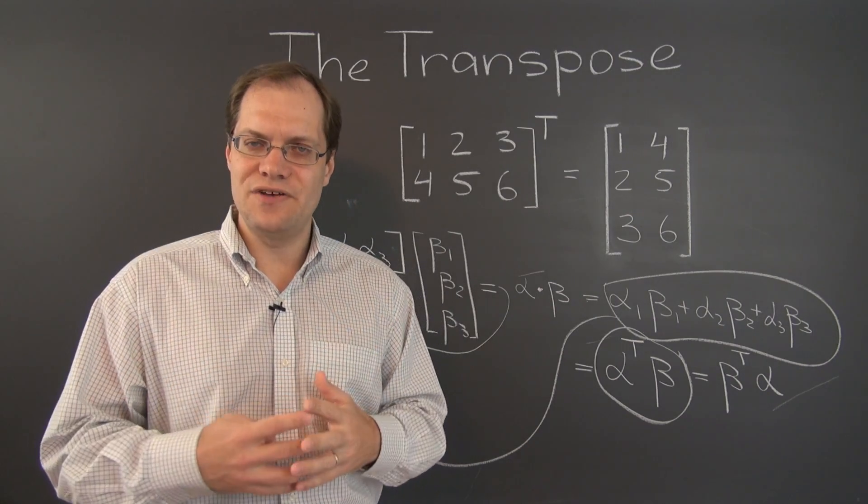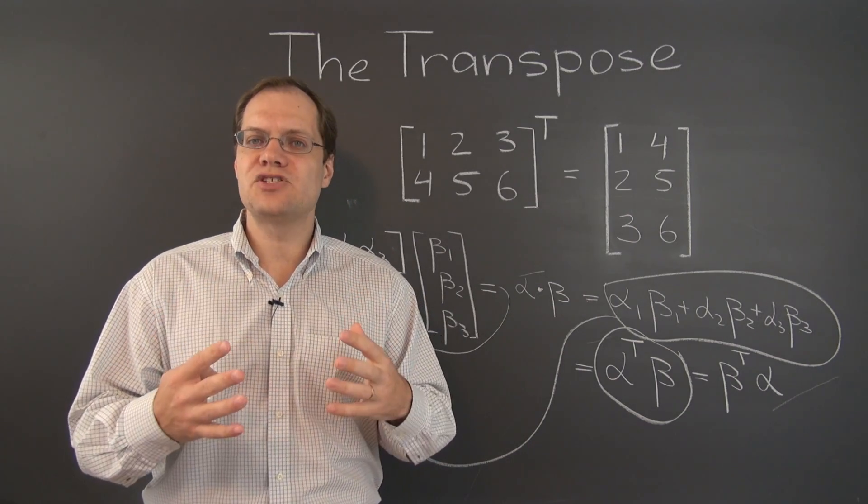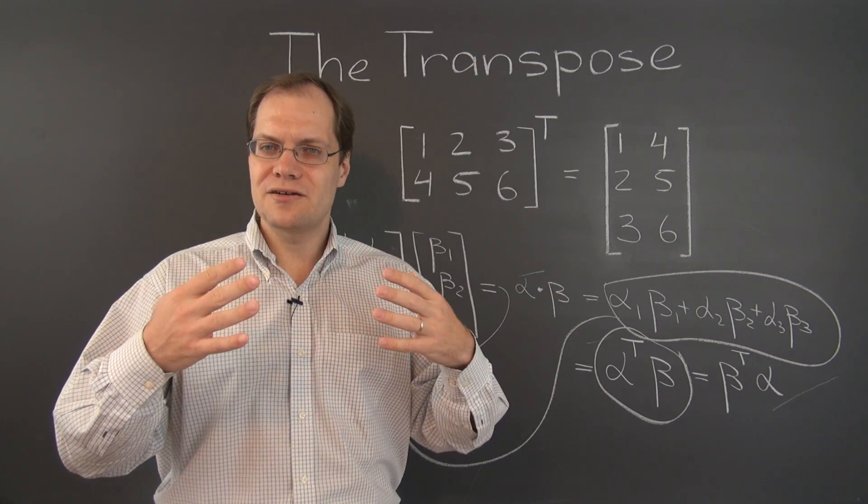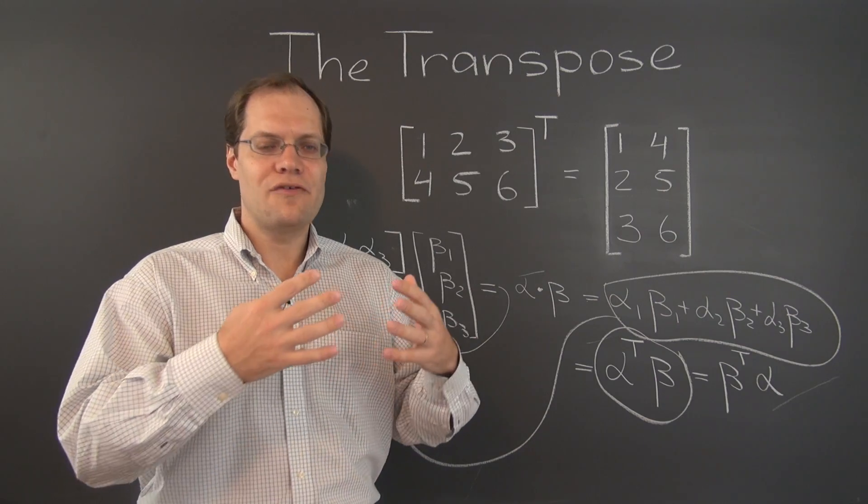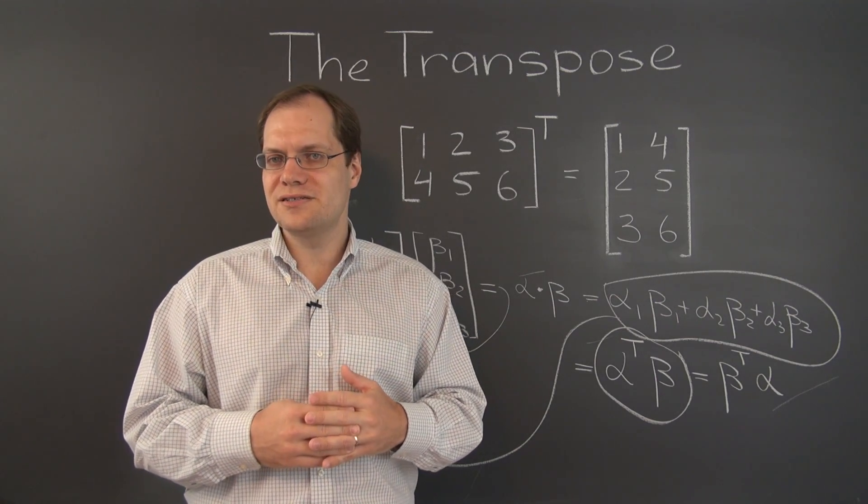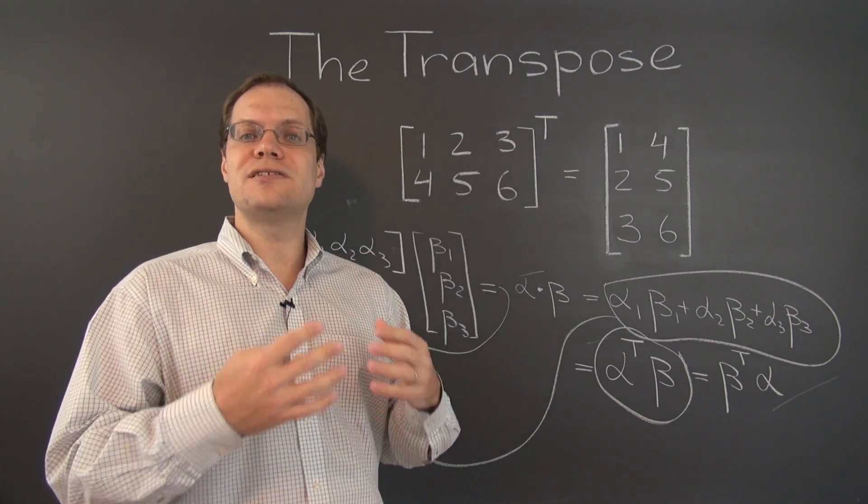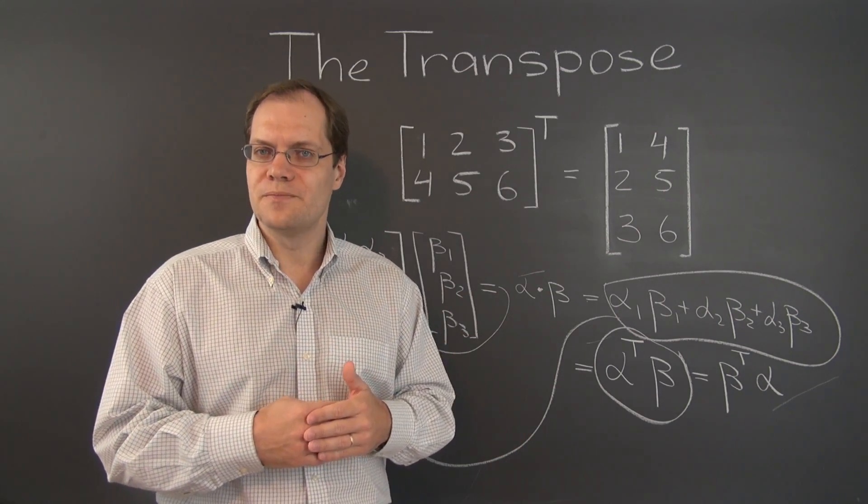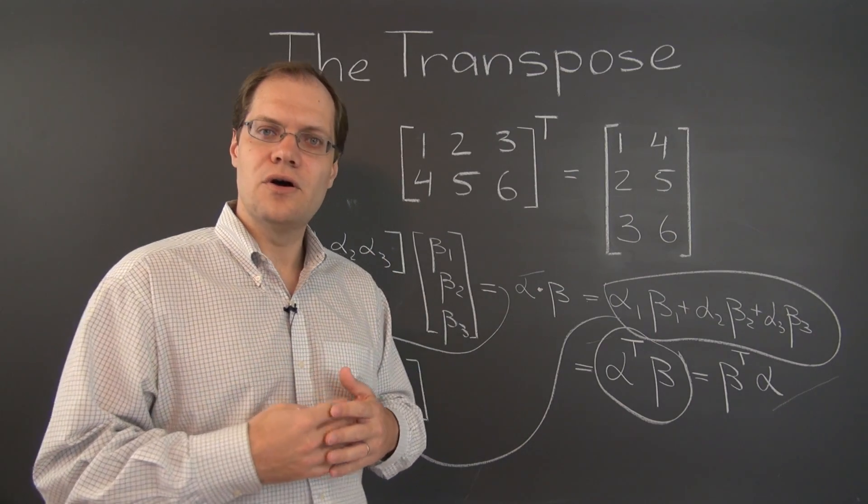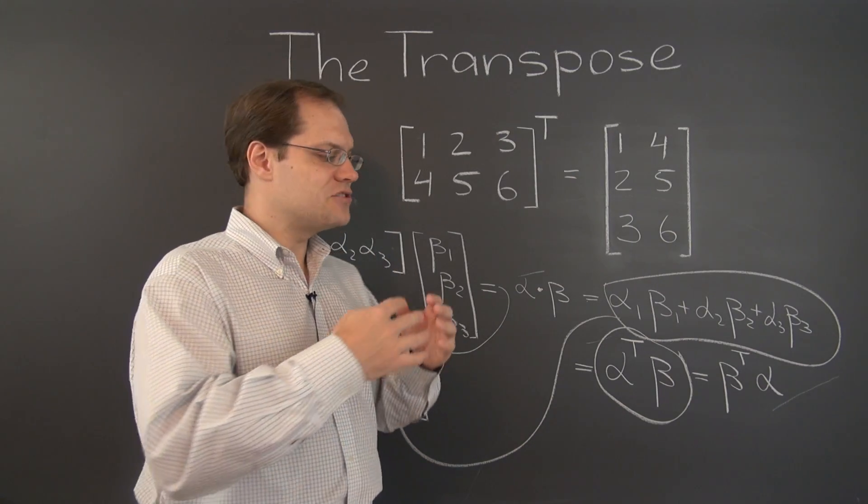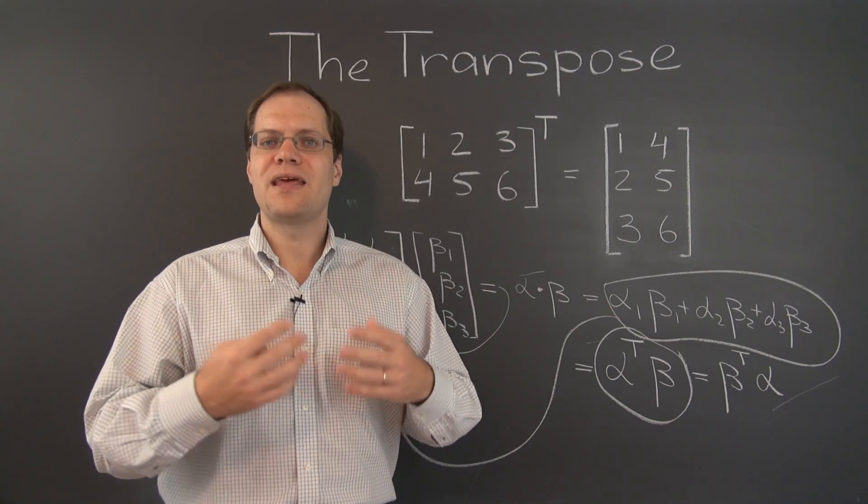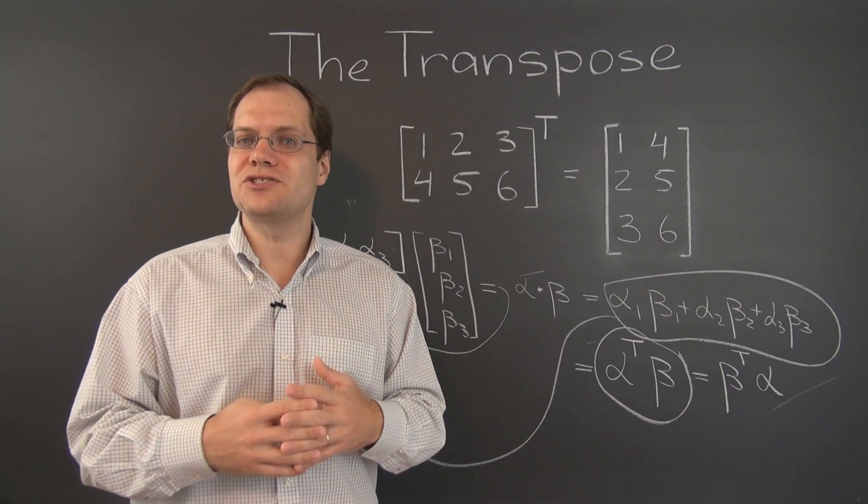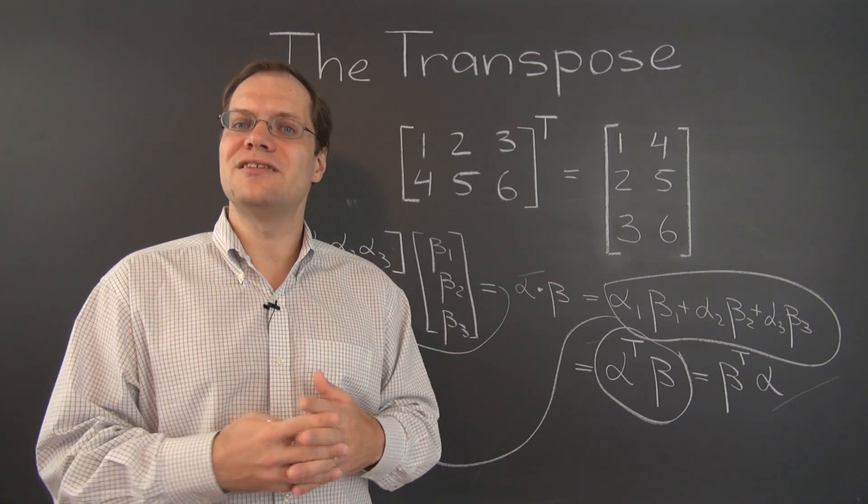So what we're going to do in the next video is consider the transpose of a product of two matrices. Just like previously, we considered the inverse of a product of two invertible matrices and concluded that that inverse equals the product of the individual inverses in the reverse order. So our goal in the next video will be to find out whether the transpose of a product can be expressed in terms of the individual transposes. So it's a great question to think about before you watch the next video.